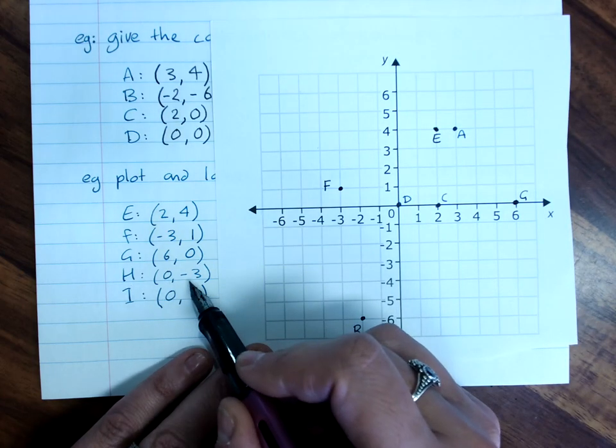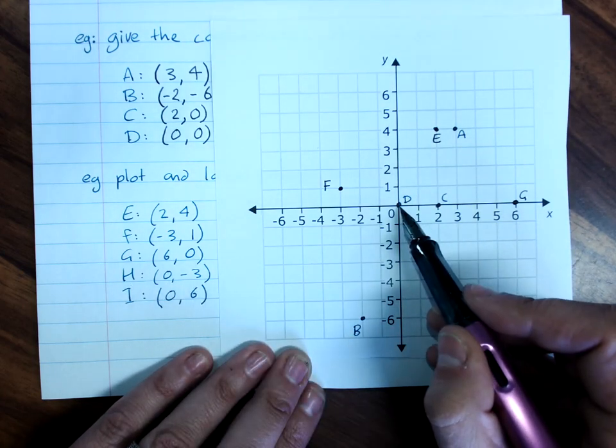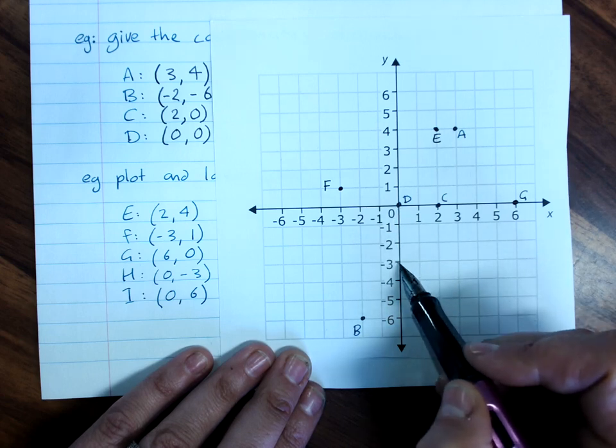H is at zero, negative three. Zero on the x, down to negative three on the y.